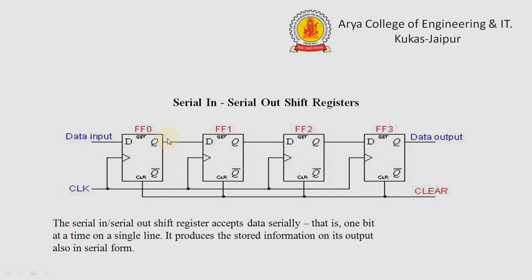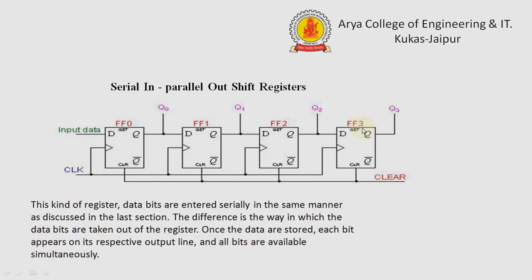When we apply the input, the first flip-flop gives its output as the input to the next flip-flop, then flip-flop 1's output feeds into flip-flop 2, and flip-flop 2's output feeds into flip-flop 3, which gives the data output in serial form. So the communication is in serial form from flip-flop 0 to flip-flop 1, then flip-flop 2, then flip-flop 3.